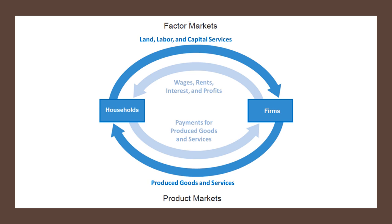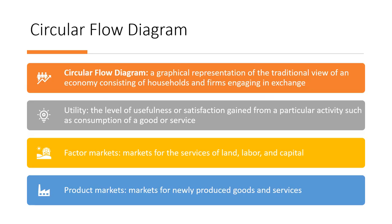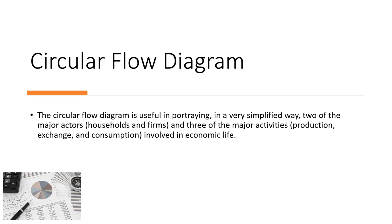Markets in the neoclassical model are assumed to be competitive, meaning many buyers and sellers interact freely and prices are determined by supply and demand. The model emphasizes competition, rationality, and equilibrium in understanding economic behavior and outcomes. The circular flow diagram is a graphical representation of the traditional view of an economy consisting of households and firms engaging in exchange. It portrays two major actors — households and firms — and three major activities: production, exchange, and consumption. Key terms include: utility (the level of satisfaction gained from consuming a good or service), factor markets (markets for land, labor, and capital), and product markets (markets for newly produced goods and services).